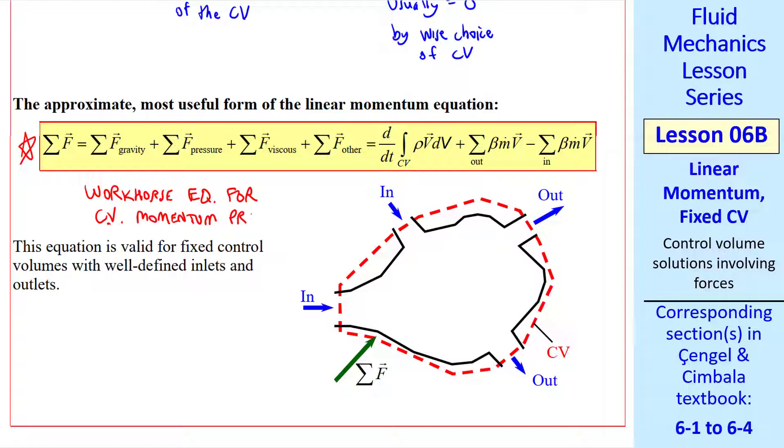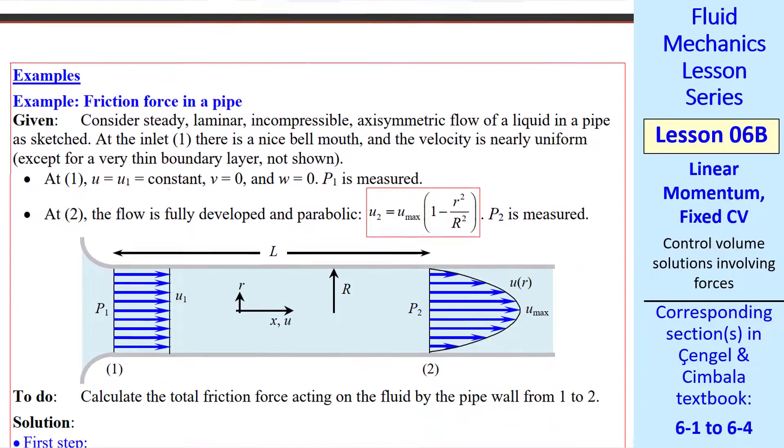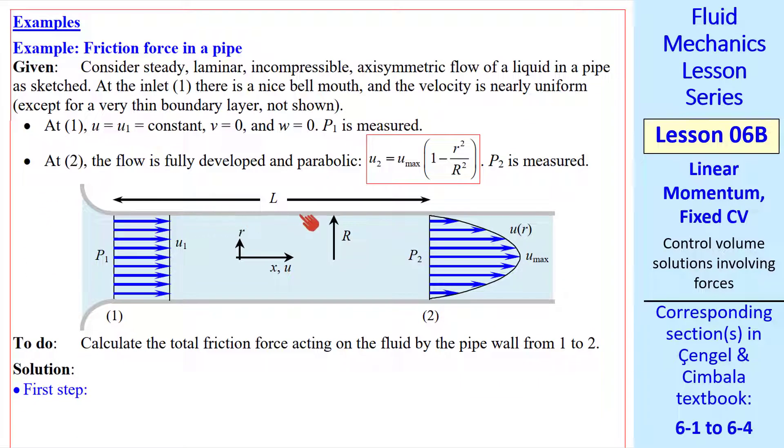This is our workhorse equation for control volume momentum problems. And it's valid for situations like this, where there are some inlets and outlets and some forces acting. Now we're ready for some example problems. I'll do a few here, and there are many more in the book. Let's consider steady, laminar, incompressible, axisymmetric flow from a well-rounded inlet into a pipe. The velocity is nearly uniform there, but it's fully developed here. And this sketch is not to scale. It typically takes many diameters to achieve this fully developed condition. The parabolic velocity profile, when fully developed, is given by this equation. And let's suppose that P2 is measured, P1 is also measured, and we want to calculate the total friction force acting on the fluid by the pipe wall from 1 to 2.